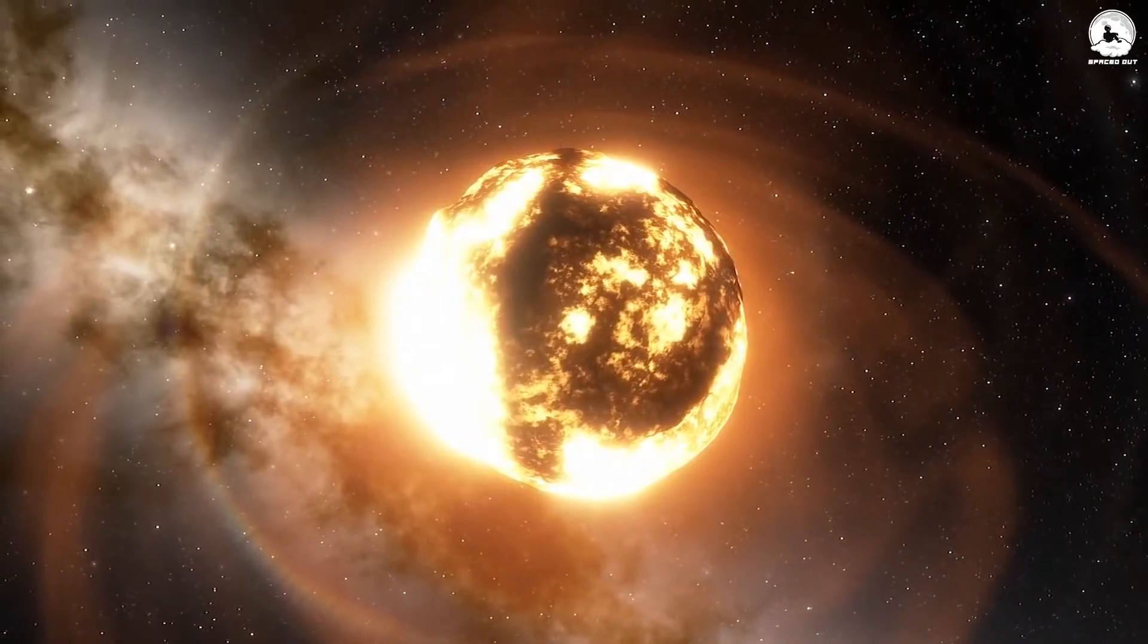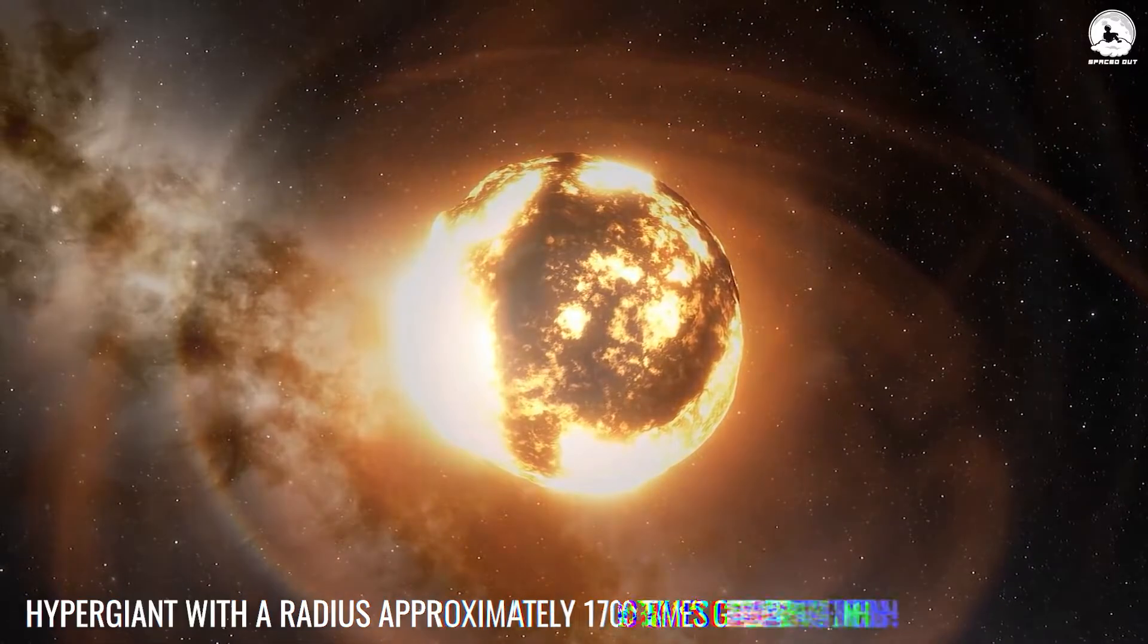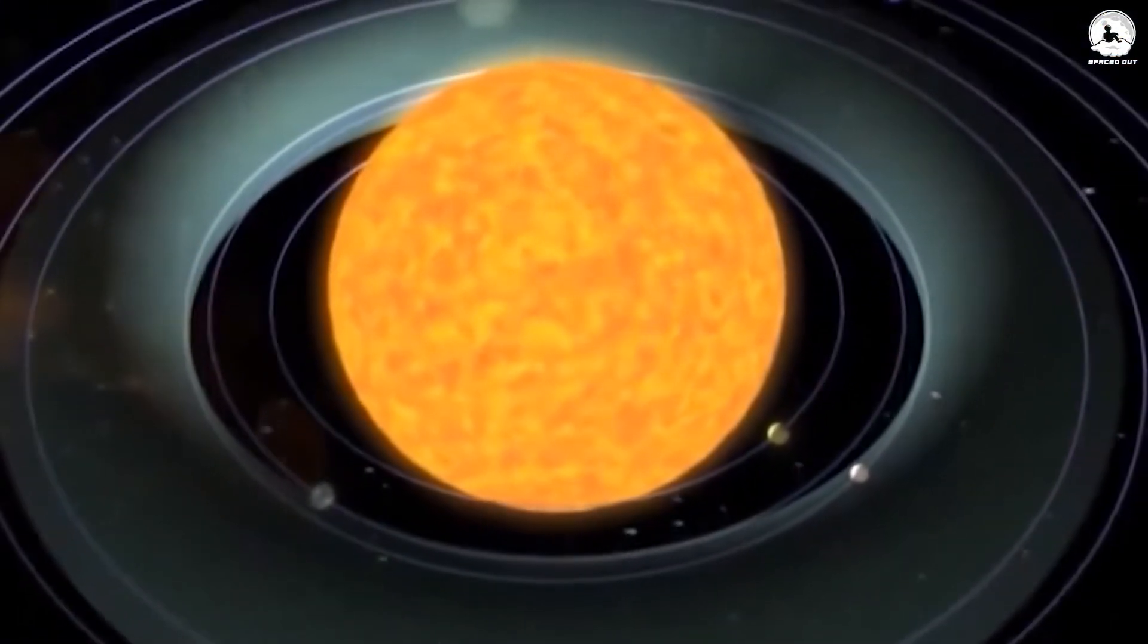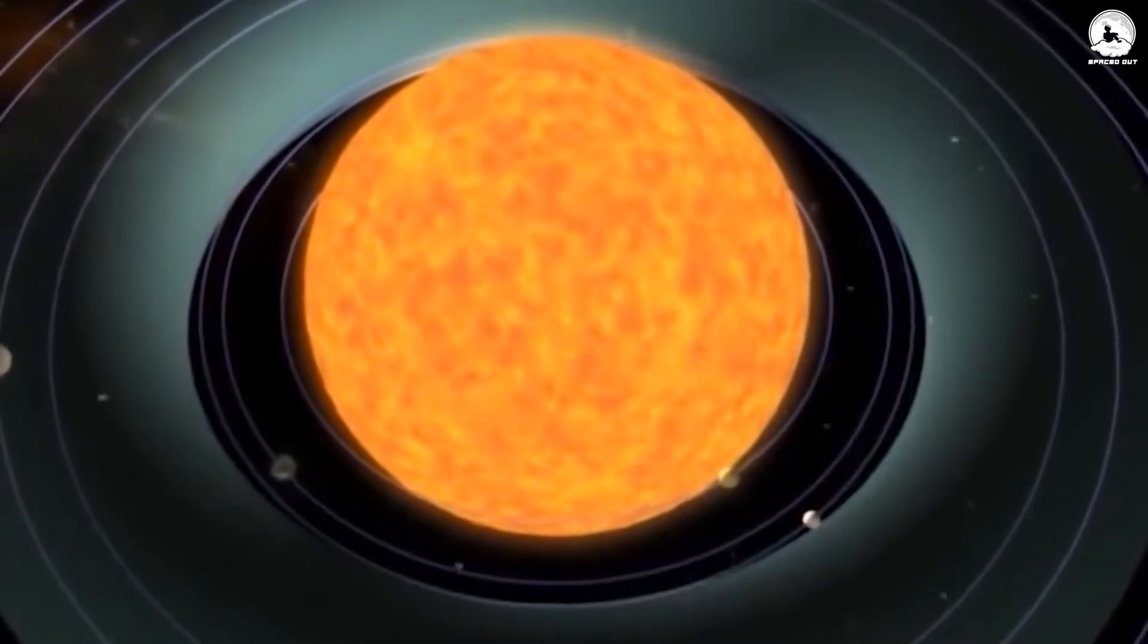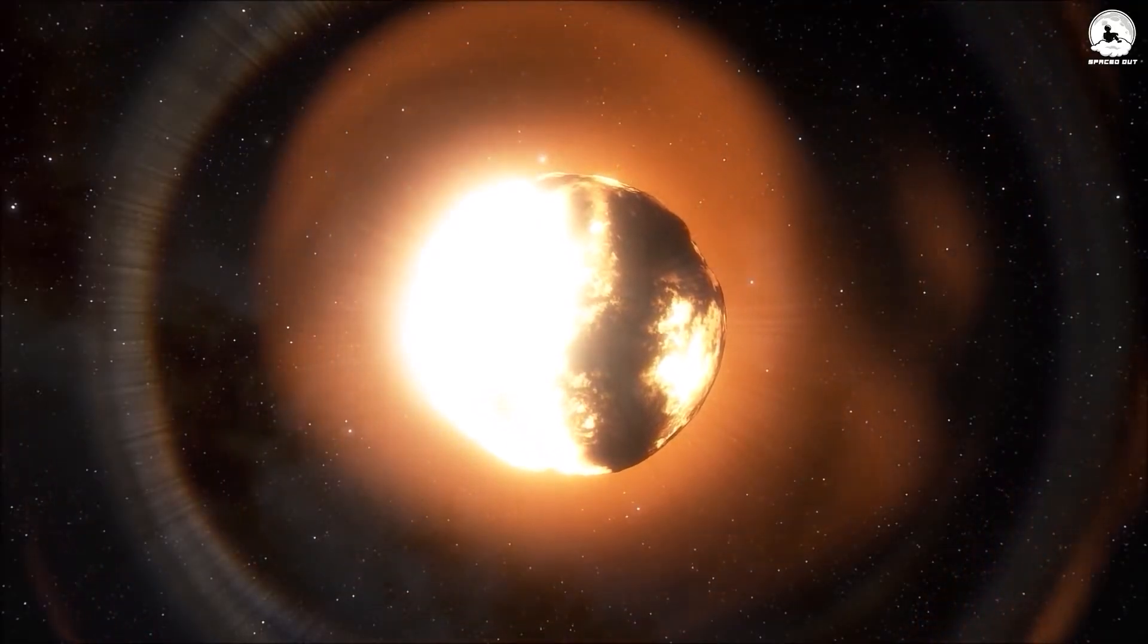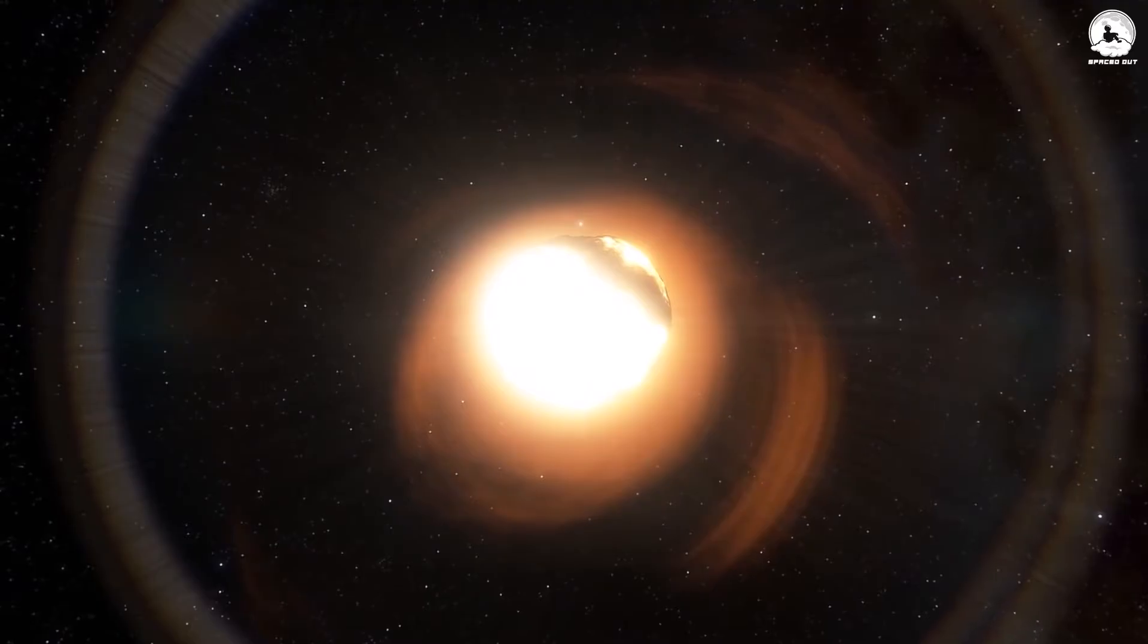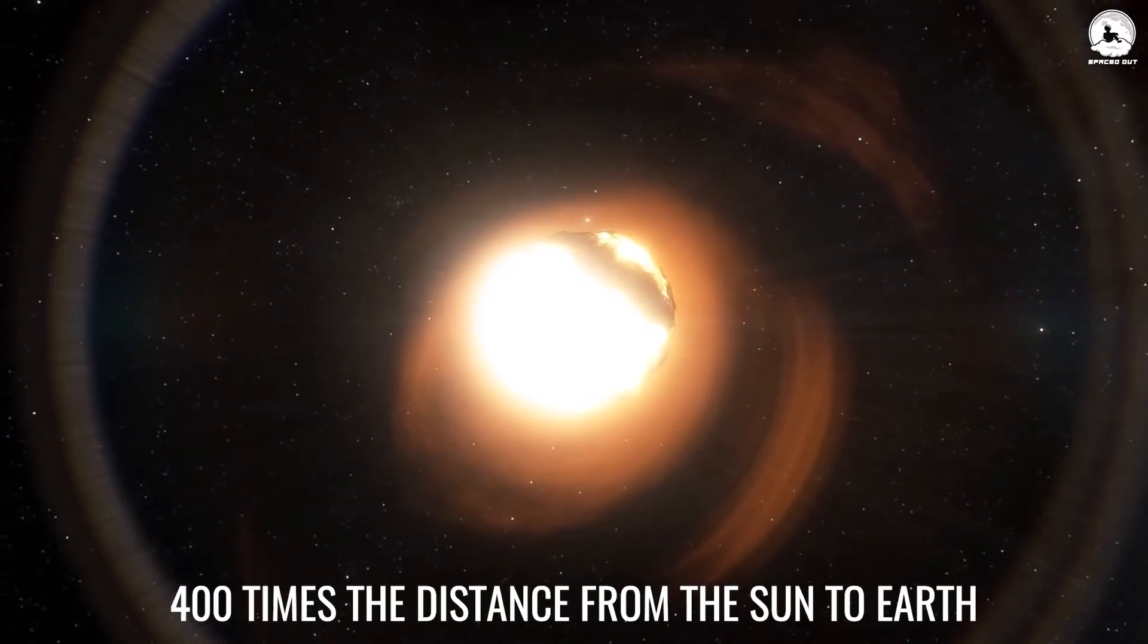To put this in perspective, the most massive star known to us, UY Scuti, is a hypergiant with a radius approximately 1,700 times greater than that of the Sun. Visualizing the sheer scale of UY Scuti, if somehow placed at the center of our solar system, its expanse would extend far beyond Jupiter's orbit. The dust and gas emanating from this colossal star would reach distances surpassing even the orbit of Pluto, roughly 400 times the distance from the Sun to Earth.